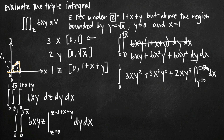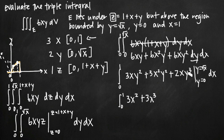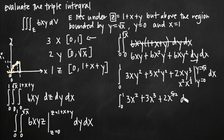Plugging in y equals square root of x: for 3xy², square root of x squared is x, so we get 3x². For 3x²y², square root of x squared gives another x, so we get 3x³. For 2xy³, square root of x cubed is x times square root of x, so multiplying by the x already there gives x² times x to the 1/2, which equals x to the 5/2. So we get 2x^(5/2). Plugging in y equals 0 gives 0 for every term, so we just have dx with our simplified expression.